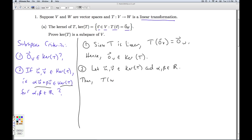Then, T of U, T of the vector U, is the zero vector in W. And T of the vector V is the zero vector in W. So that's what it means for these two to be in there. I need to show that this is in there, so I need to take T of that. Since T is linear, look what I can do.